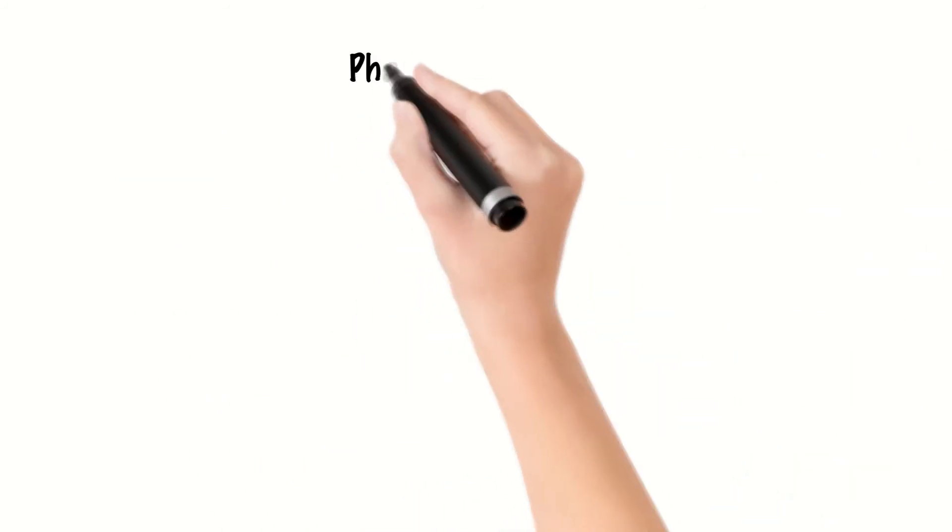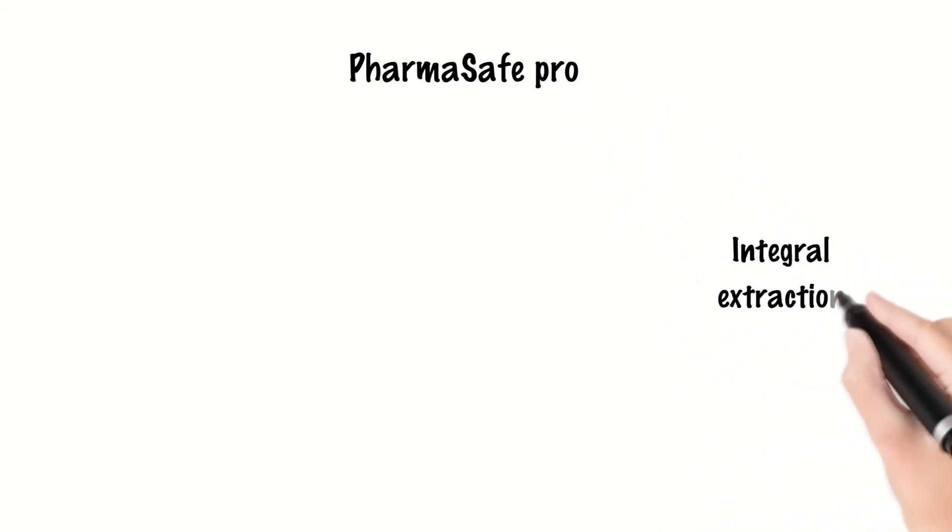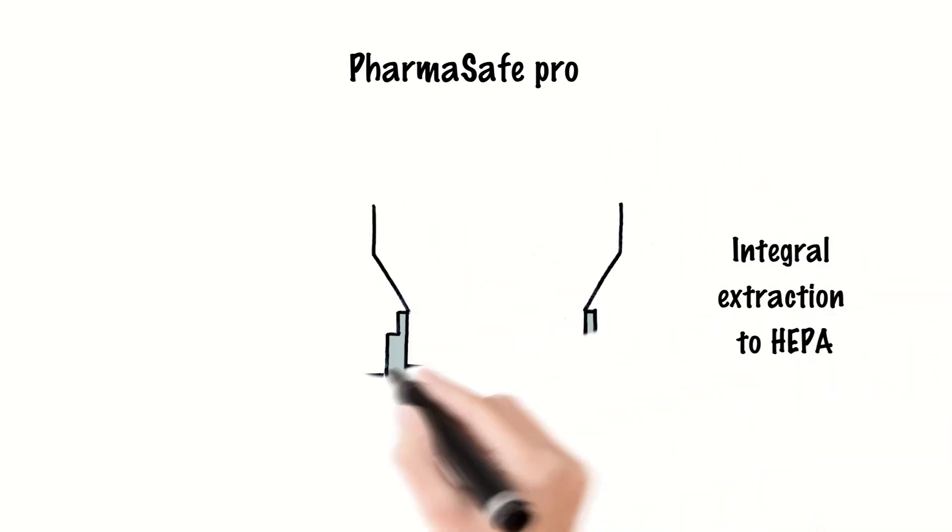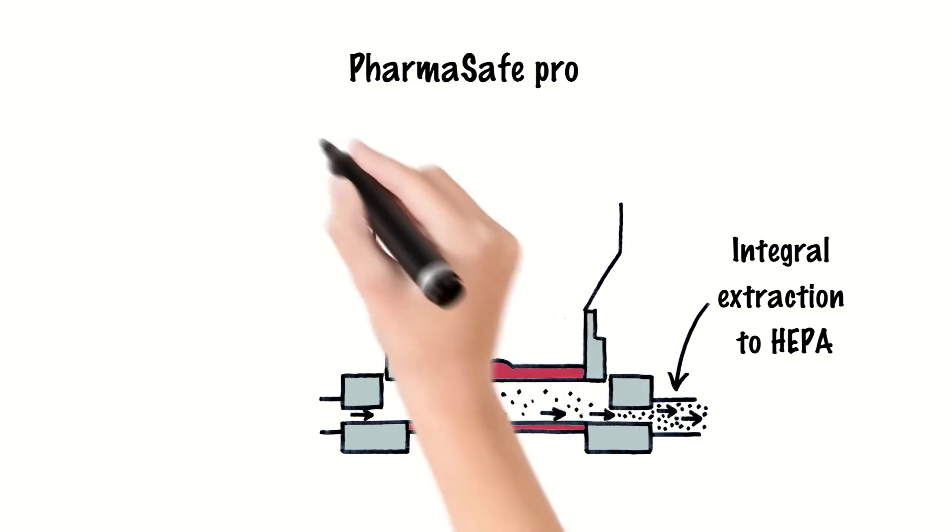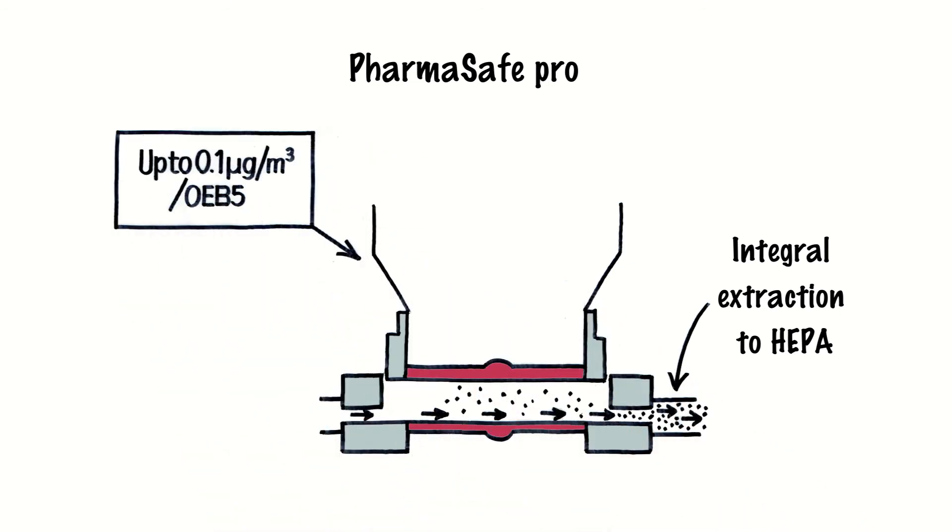The PharmaSafe Pro utilizes extraction integral to the active valve itself to capture particulate from the point of contact between the two valve halves immediately after disc separation for a more effective means of containment that performs to 0.1 microgram per meter cubed.